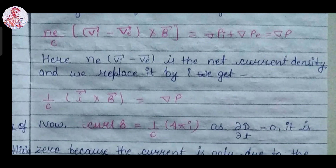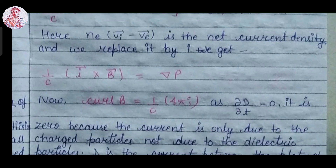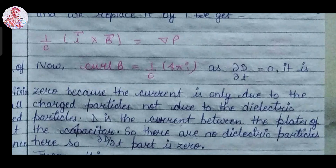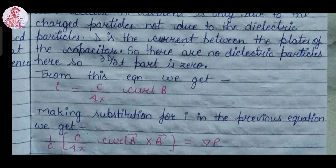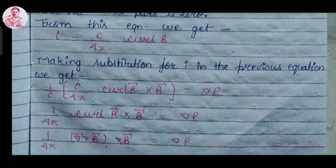Since Ne(V_i minus V_e) is the net current density, we can replace it with J. Then we can write: 1 over C times (J cross B) equals del P. Now from Maxwell's equation, curl of B equals 1 over C times 4 pi J, since del D over del T equals 0 (the current is only due to charged particles, not dielectric particles, so the displacement current term is zero). From this equation, J equals C over 4 pi times curl of B. Making this substitution, we get: 1 over 4 pi times (curl B cross B) equals del P.